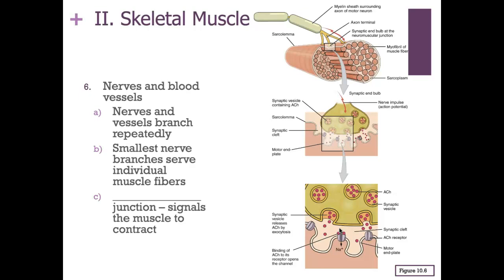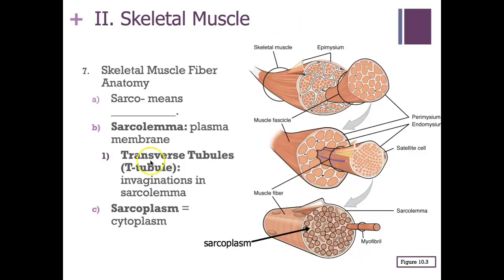Nerves and blood vessels branch repeatedly, with the smallest nerve branch serving individual muscle fibers. As the nerve reaches the muscle, it creates a neuromuscular junction where the nerve meets the muscle. The nerve impulse causes the nerve to release a neurotransmitter called acetylcholine, which attaches to acetylcholine receptors on the muscle cell.